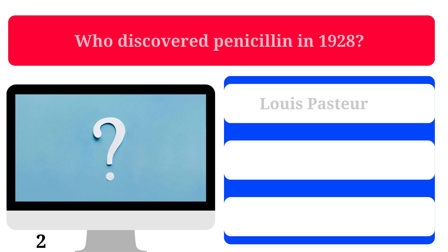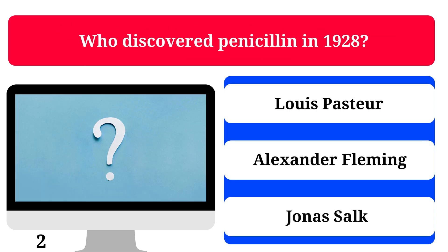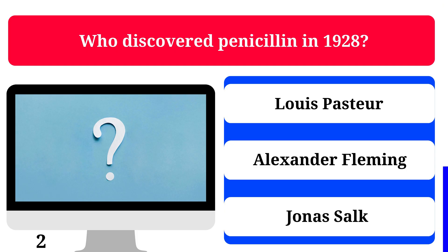Who discovered penicillin in 1928? Louis Pasteur, Alexander Fleming, or Jonas Salk? The correct answer is Alexander Fleming.